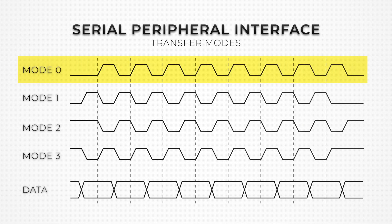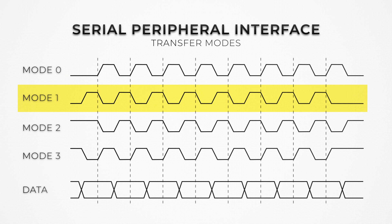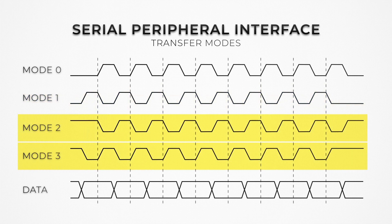In mode zero, clock polarity is normally low and goes high when communication occurs; data is sampled on the rising edge and shifted on the falling one. In mode one, clock stays the same while data is sampled on the falling edge and shifted on the rising. In modes two and three, clock polarity is opposite — normally high and low when communicating. In mode two, data is read on the falling edge, while in mode three on the rising. Shifting of the data works vice versa.